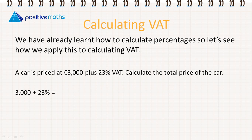We have already learned how to calculate percentages, so let's see how we apply this to calculating VAT. We saw in bills that VAT can be added on to the end of a bill. In this example, a car is priced at €3,000 plus 23% VAT. Calculate the total price of the car — so it's going to be €3,000 plus 23%.